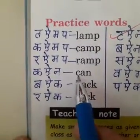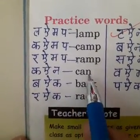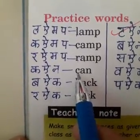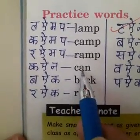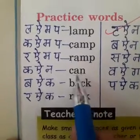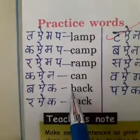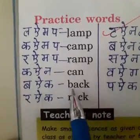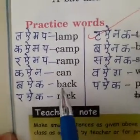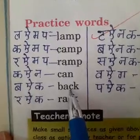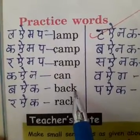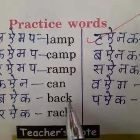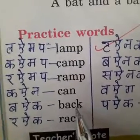K, A, N — Can. K, A, N — Can. B, A, K — Back. In this word, C says K and K says K. The sound of both letters is K.